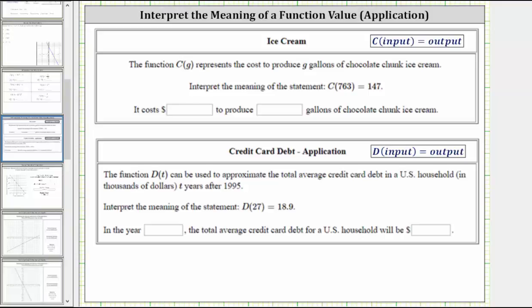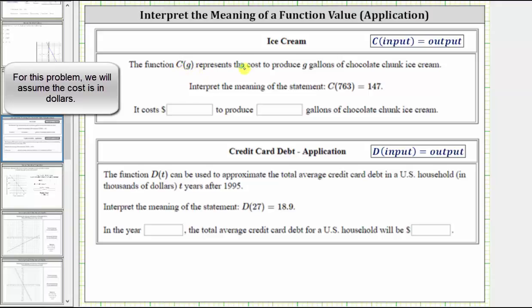In this video, we will take a look at the meaning of two function values. The function c of g represents the cost to produce g gallons of chocolate chunk ice cream. Interpret the meaning of the statement c of 763 equals 147.